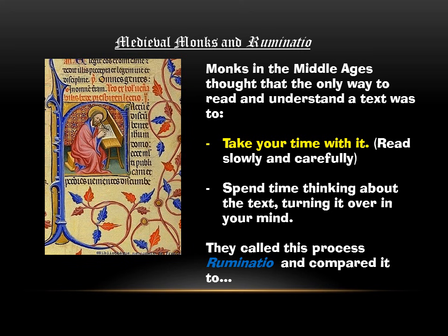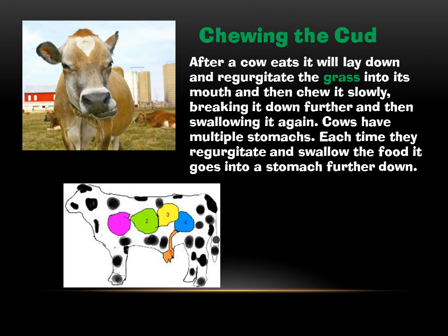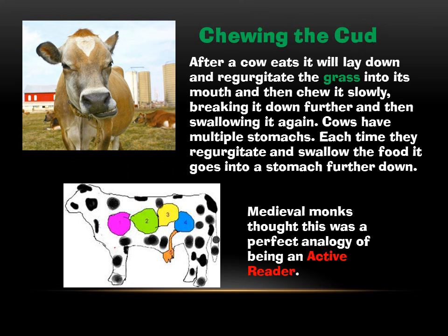They called this process Ruminatio — in English we get the word 'rumination.' The Latin is Ruminatio. They compared it to something very specific: chewing the cud. When a cow eats grass, it lays down, regurgitates the grass back into its mouth — that regurgitated grass is called the cud — and chews it really slowly, breaking it down further, then swallows it again. Cows have multiple stomachs, so each time they regurgitate and swallow, the food goes into a stomach further down.